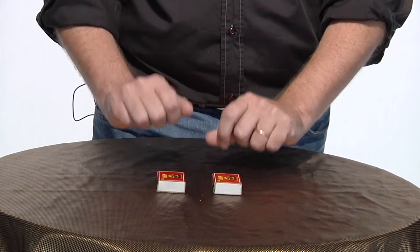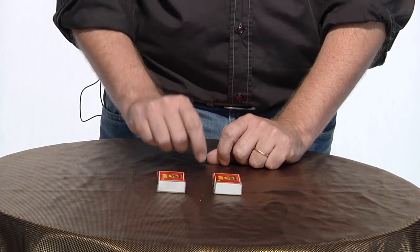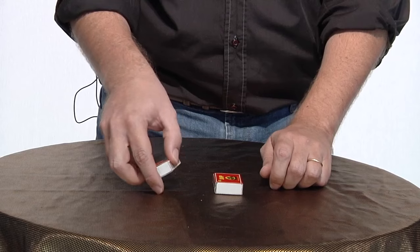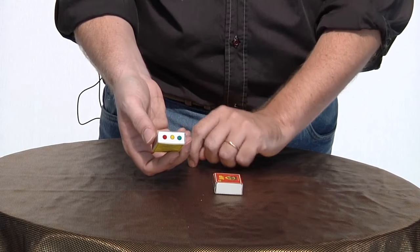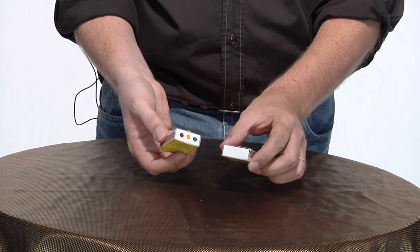Here I have two matchboxes that look the same, but they are not the same because this matchbox has some dots and the other one does not have any dots.